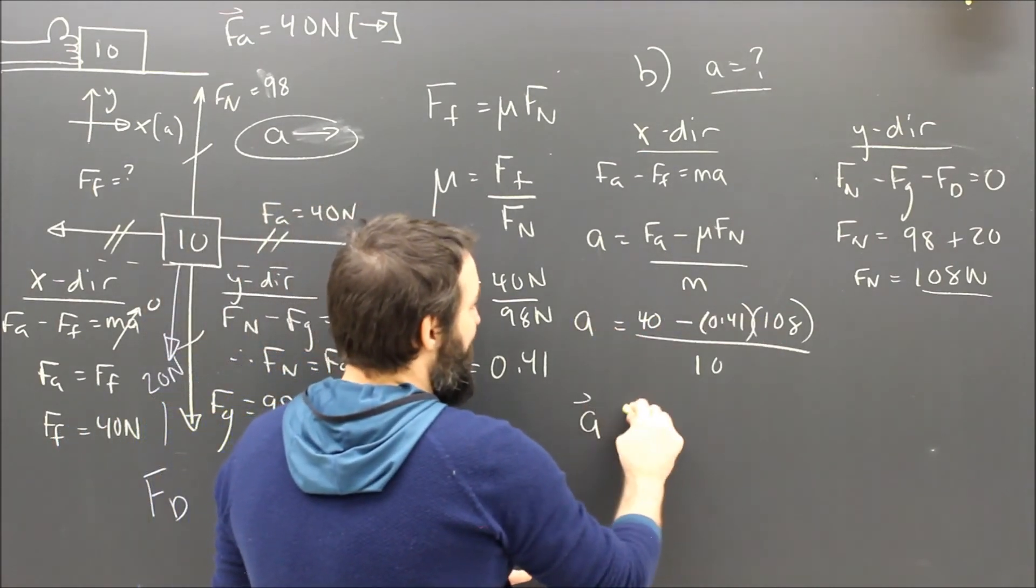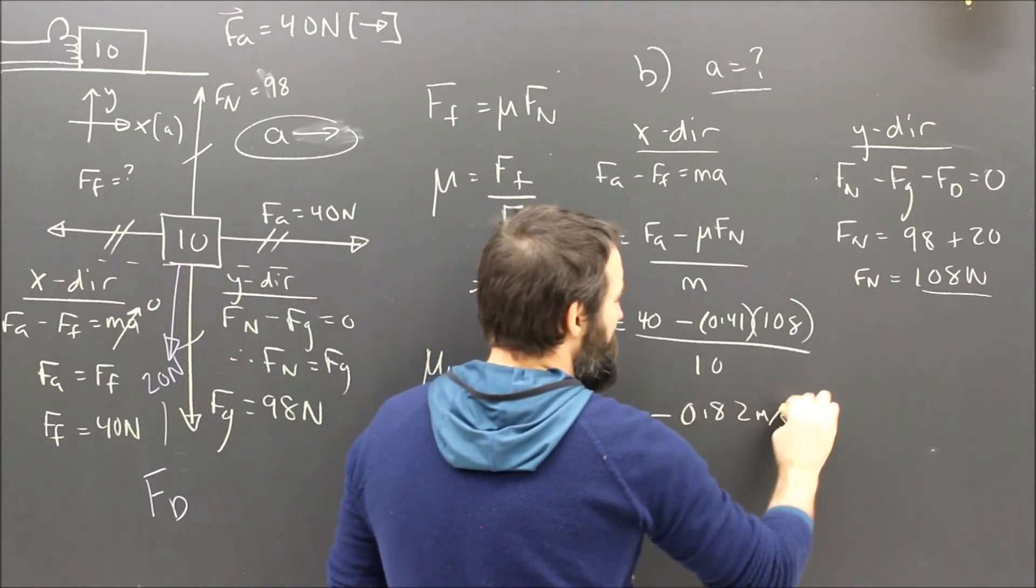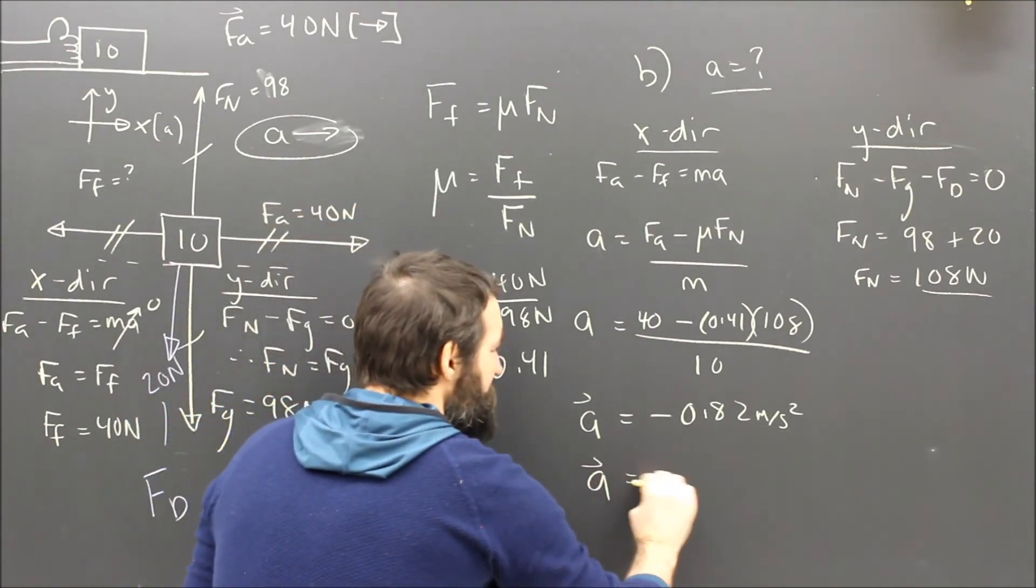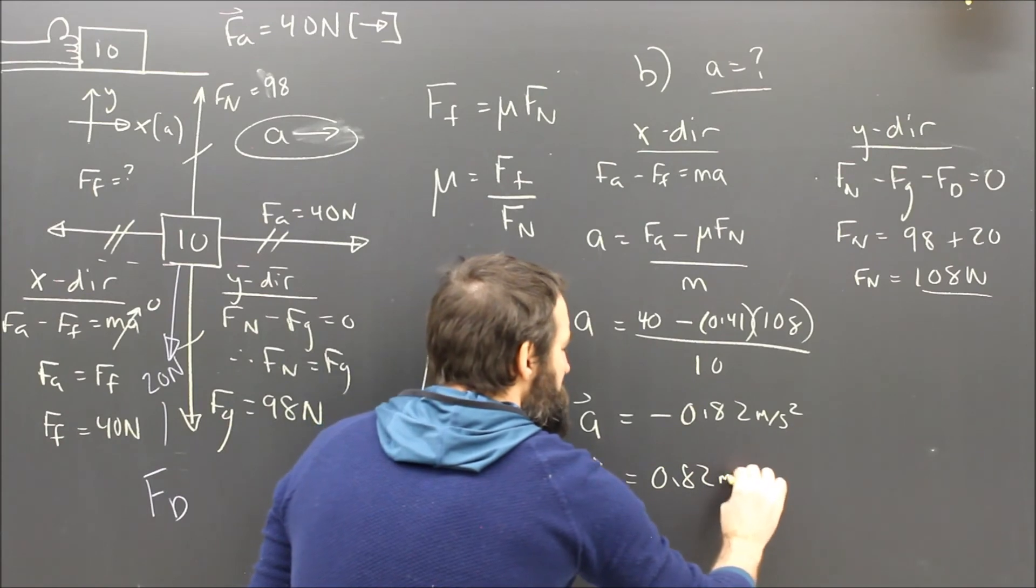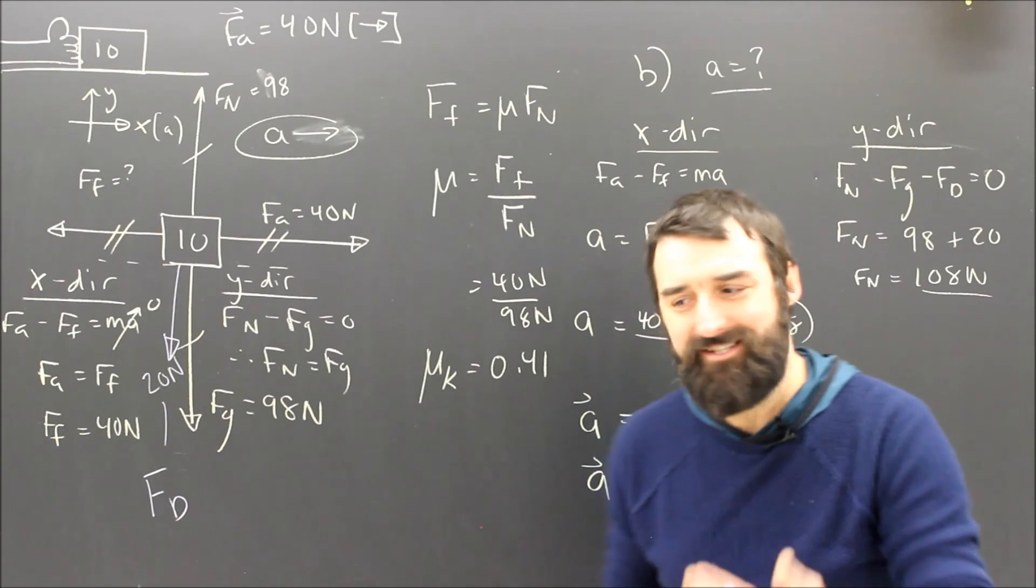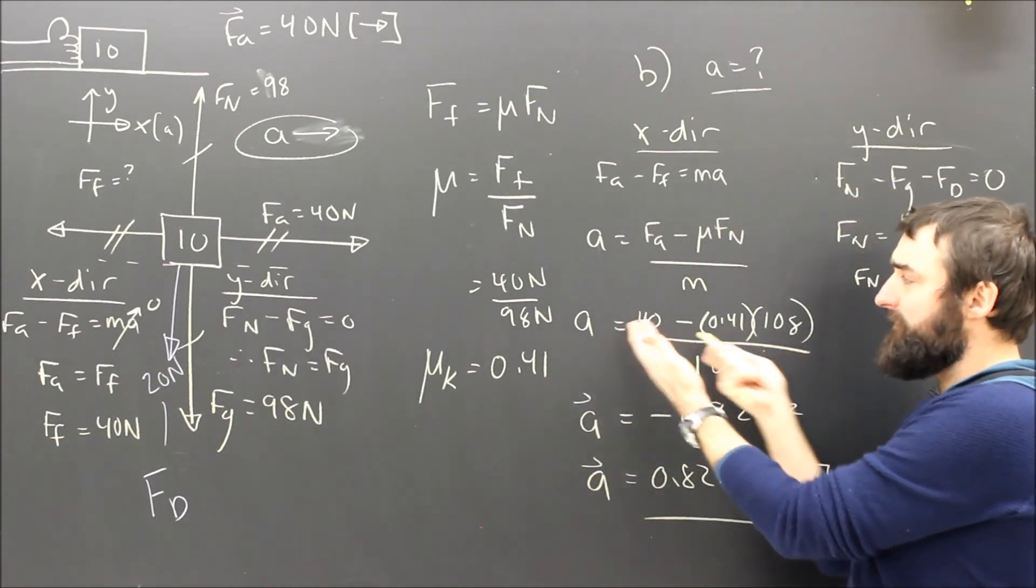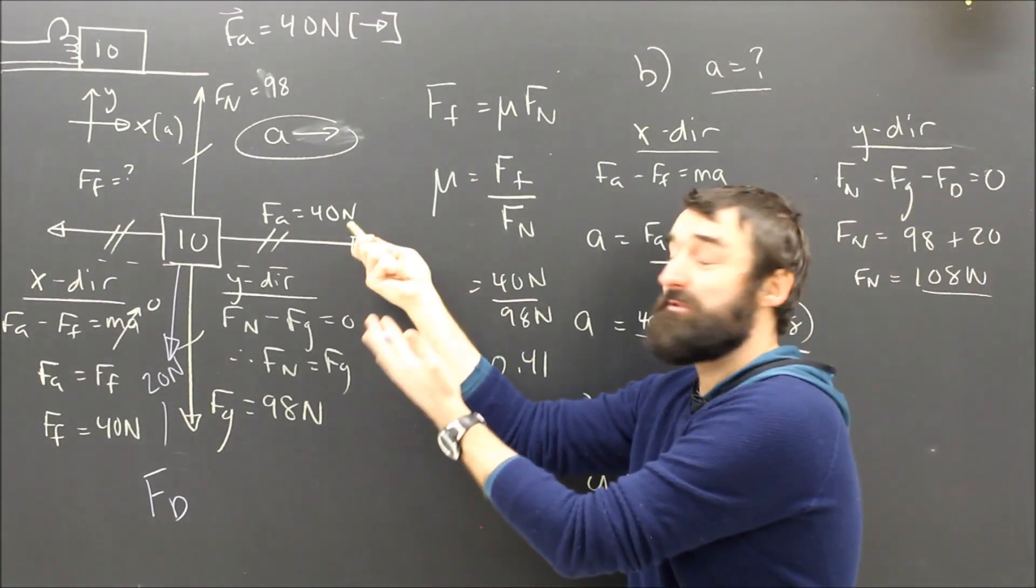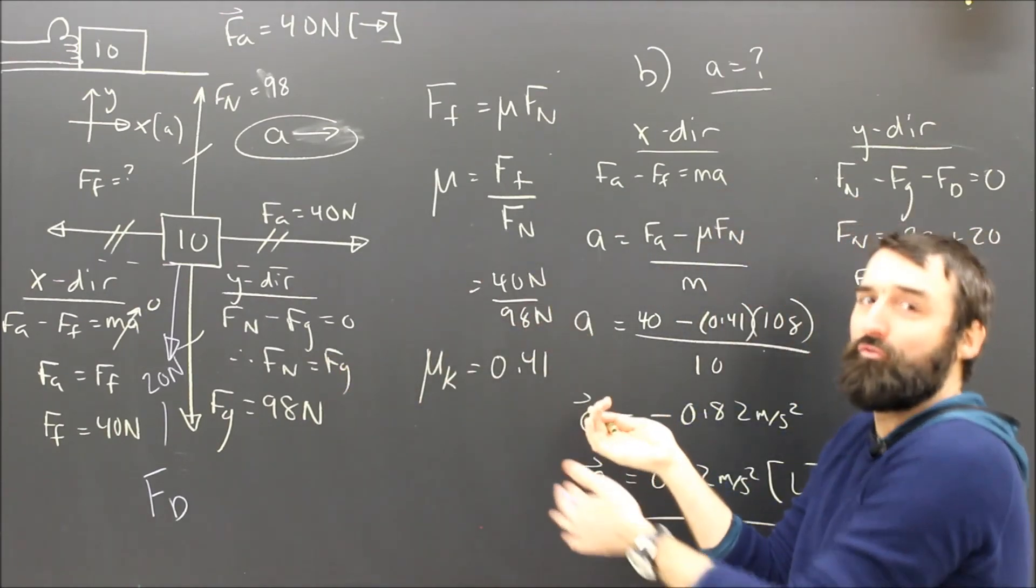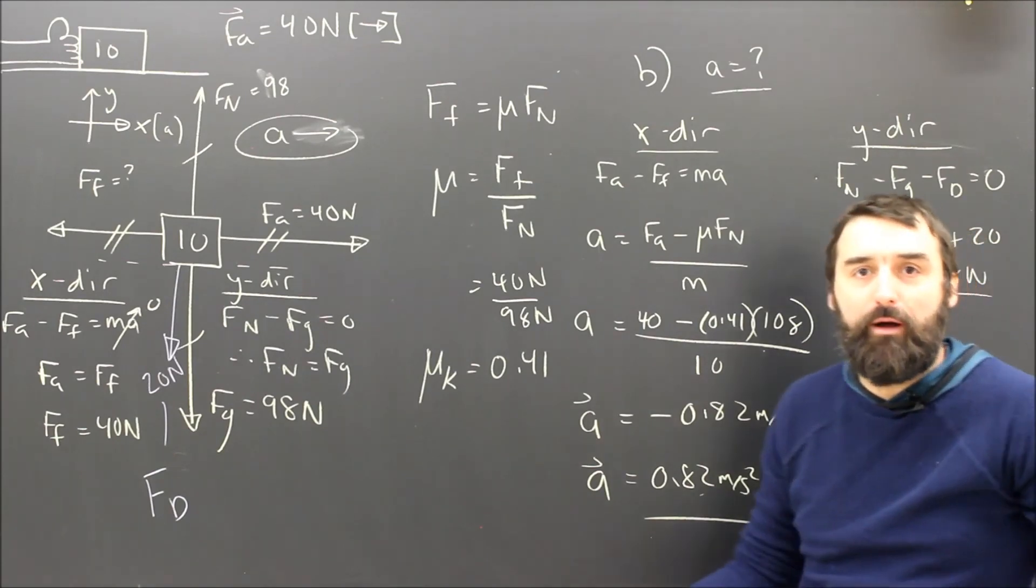Shoving everything in, getting my answer, I get an answer of negative 0.82 meters per second squared. And I stop to make sure that it makes sense. What's my actual answer? The acceleration is 0.82 meters per second squared backwards, or to the left. And I think to myself, does that make sense? Yeah, of course it does. The force of friction is going to be bigger than my applied force. Because the applied force I was applying was just enough to balance friction. But FN grew, so friction grew, so the thing is going to accelerate backwards, which means it slows down. No problem. Not very surprising.